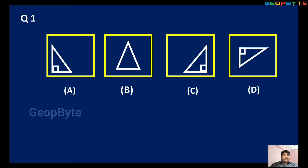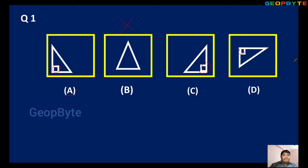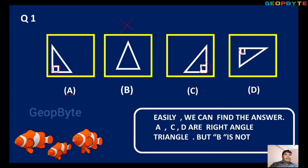This is a previous year question. A, B, C, D — four figures given. Out of these four, what is the different one? Observe the question. You can easily identify: in the first figure, this is a right angle triangle — right angle here. This is also right. But option B is not a right angle, so B is the different one. The answer is B. A, C, D are right angle triangles, but B is not a right angle.